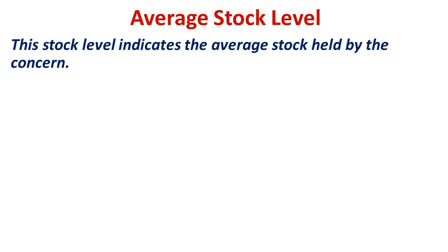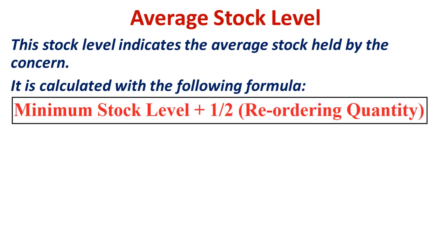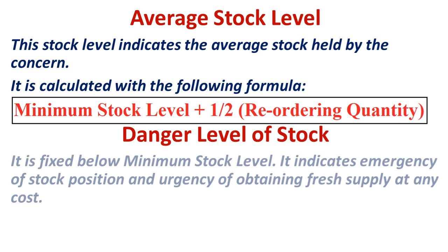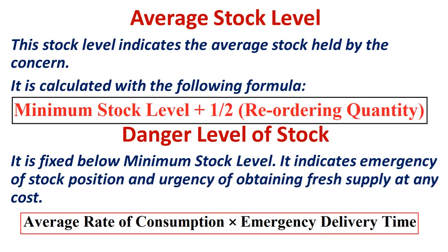Average stock level is the average level of stock held in the stores department. The formula is minimum level plus half of the reorder quantity. Danger level is the level below the minimum level. It is calculated as average rate of consumption multiplied by emergency delivery time — that is, the quickest possible mode of transportation to get the material delivered. The cost of this emergency delivery will be higher.